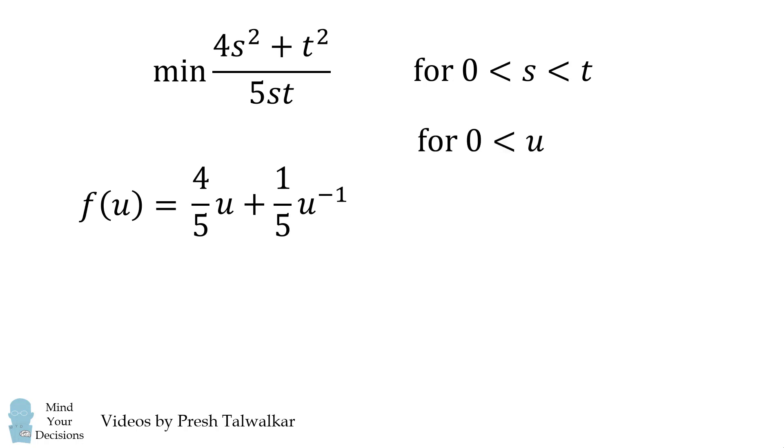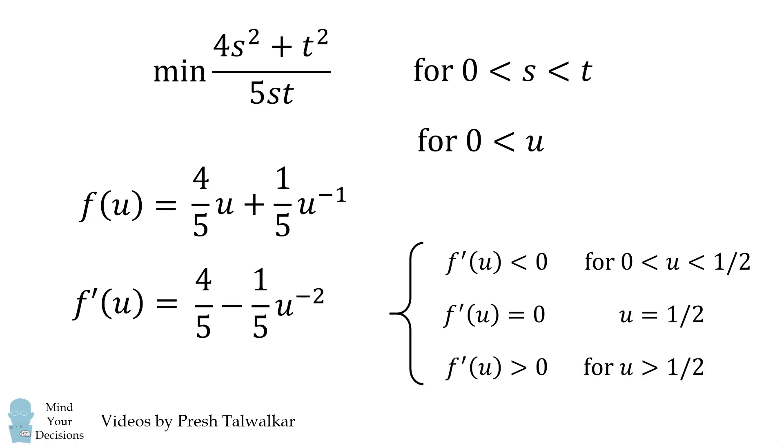We will then take the first derivative of this function which will equal 4 fifths minus 1 fifths u to the power of negative 2. This function will equal 0 when u is equal to 1 half. It'll be negative when u is between 0 and 1 half and it'll be positive for u greater than 1 half.